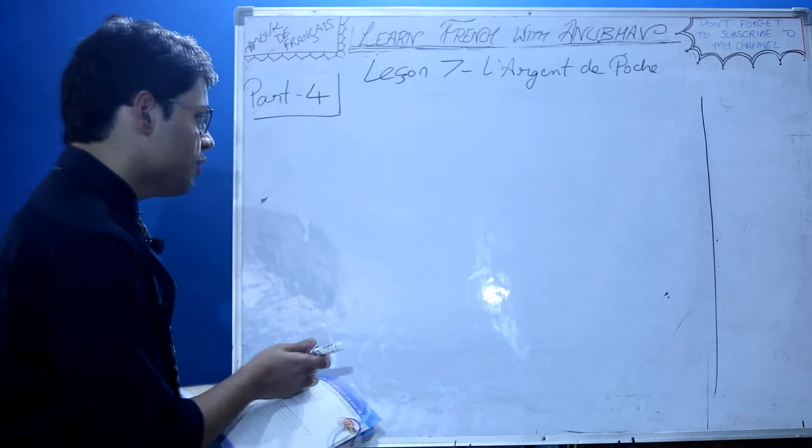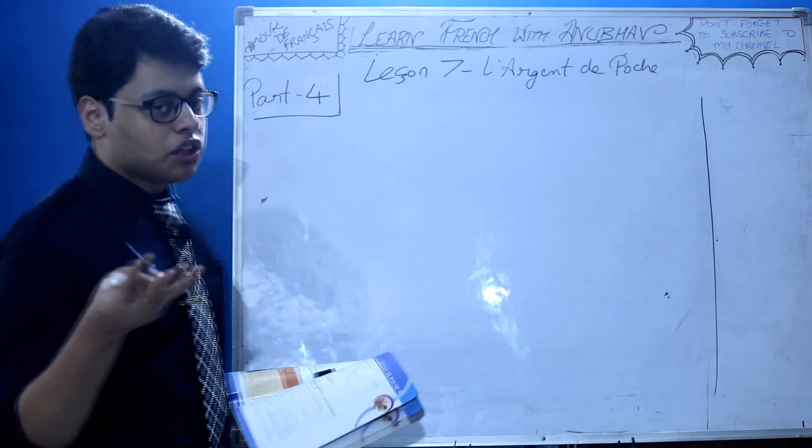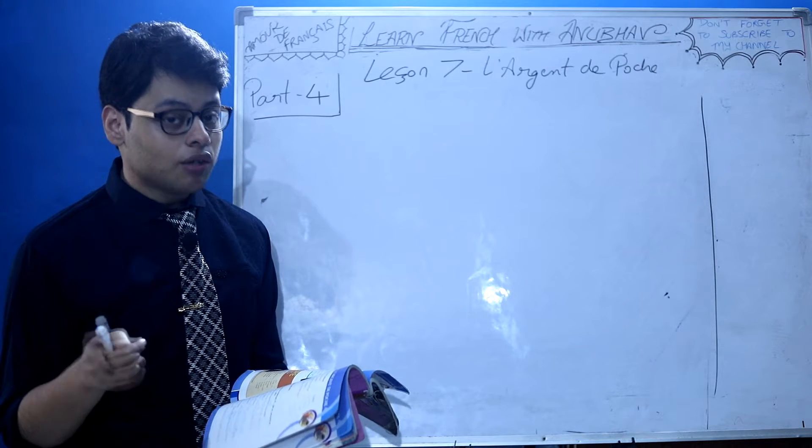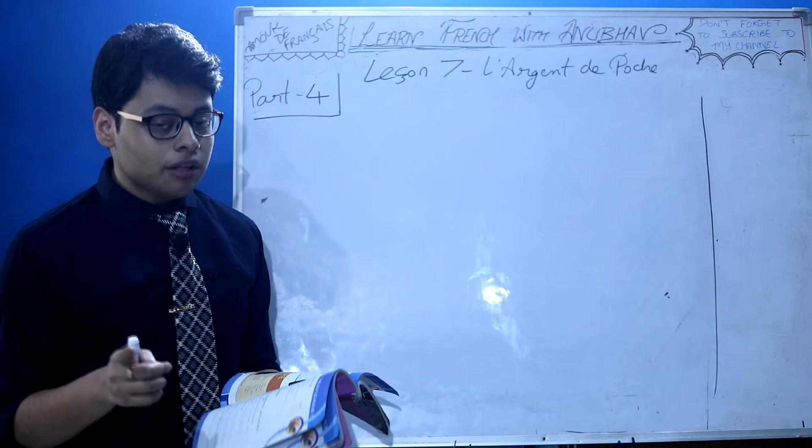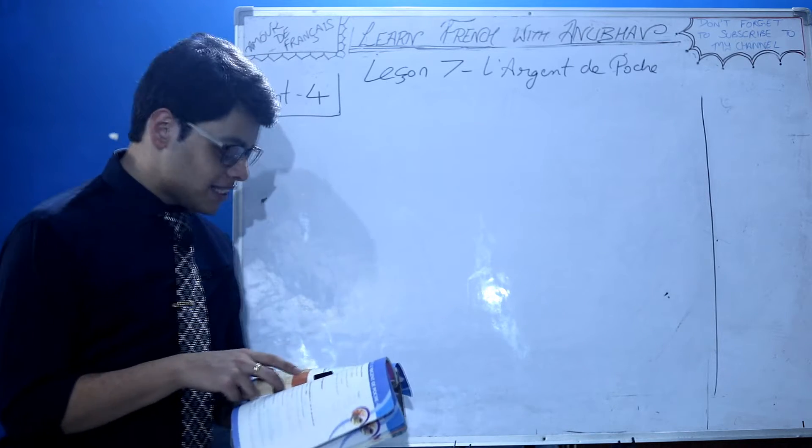Today's class we are continuing with Lesson 7, L'argent de Poche, part 4. Part 1, part 2, part 3, and all other videos based on this textbook are in the playlist titled Audition Class 9. The link is in the description below.